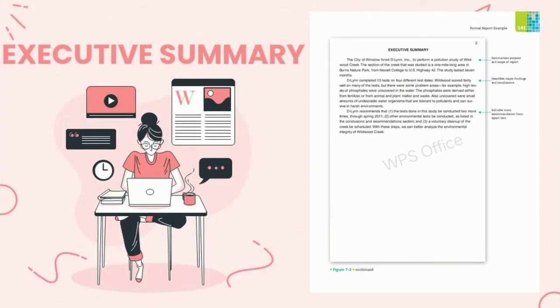Fifth is the executive summary — no formal report would be complete without one. For its content, it summarizes the purpose and scope of the report, describes major findings and conclusions, and includes the main recommendations from the report text.